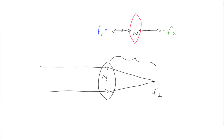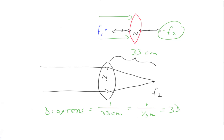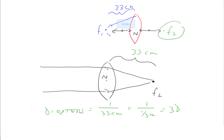What if instead of two meters, that distance was 33 centimeters? The vergence in diopters equals one over the distance in meters. Thirty-three centimeters equals one third of a meter, so the dioptric power of that lens is three diopters, because one over one third equals three. This holds true for f2 — parallel light focused to a point 33 centimeters away — or for f1, where a point source placed 33 centimeters away would emerge as parallel light.